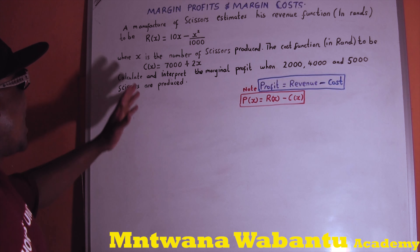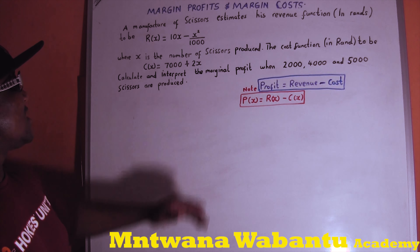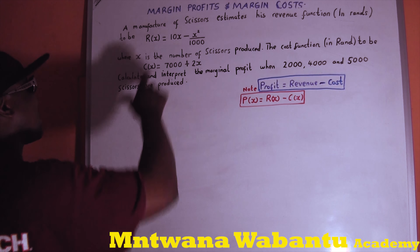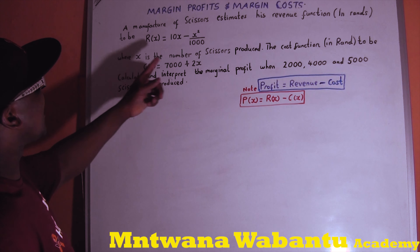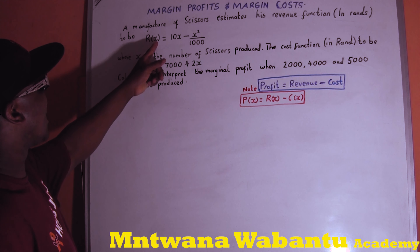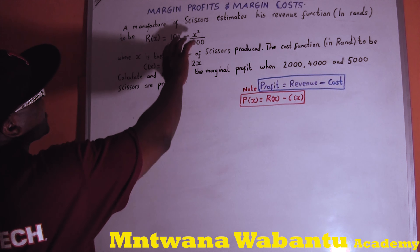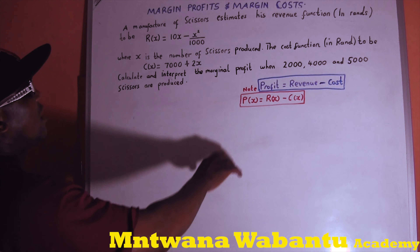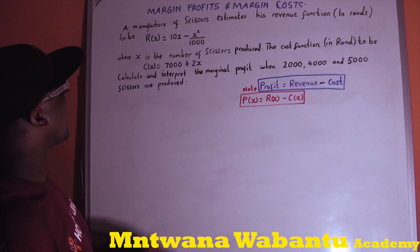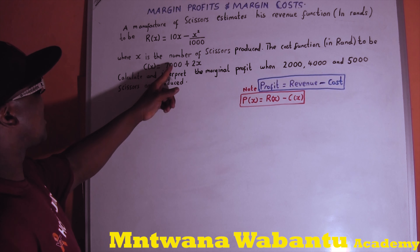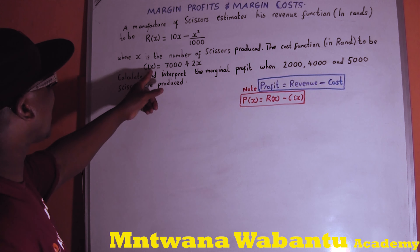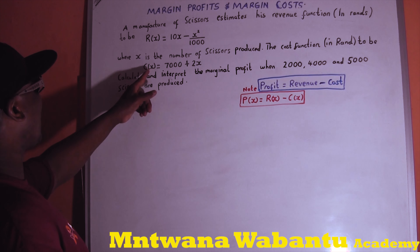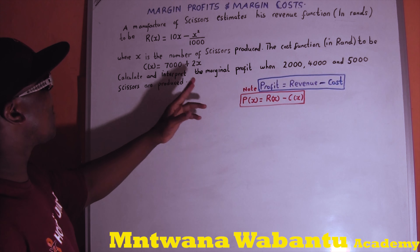The main question here: a manufacturer of scissors has a revenue function. So this is the revenue function — x represents the number of scissors. If I put 20 scissors I get a certain revenue; if I put 4 scissors it gives me a different revenue. We also have a cost function: 100 plus 2x. So if I put x equals 4, it tells me how much it's going to cost.